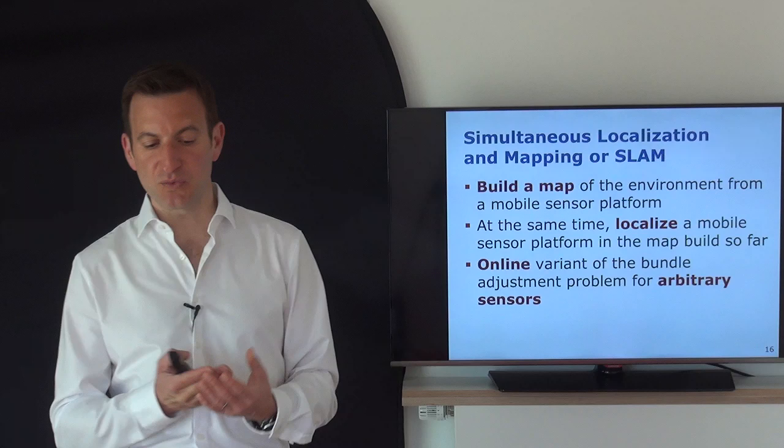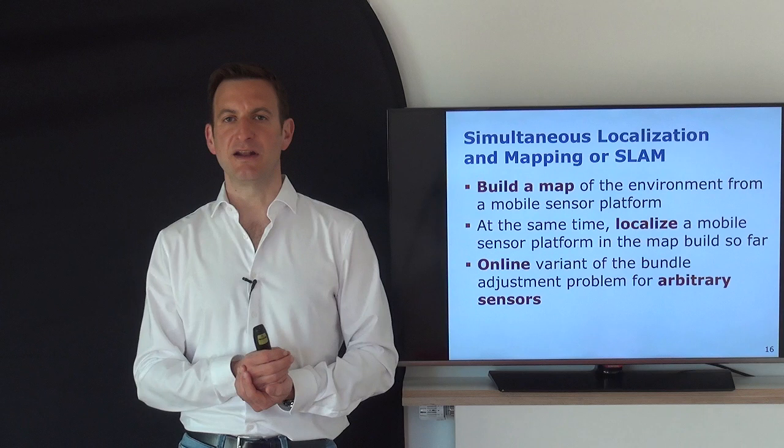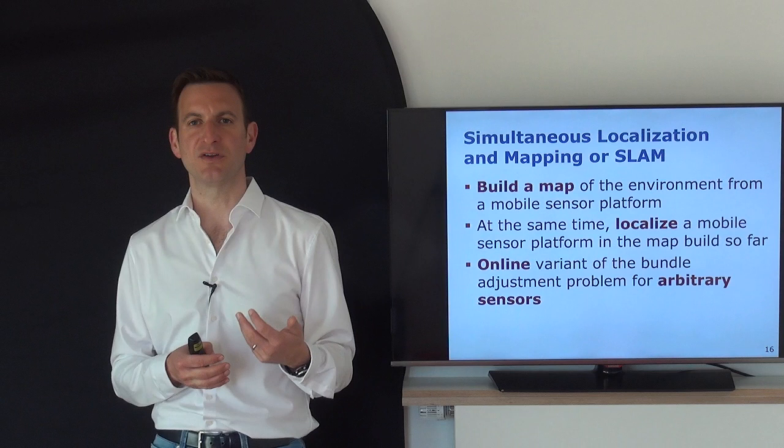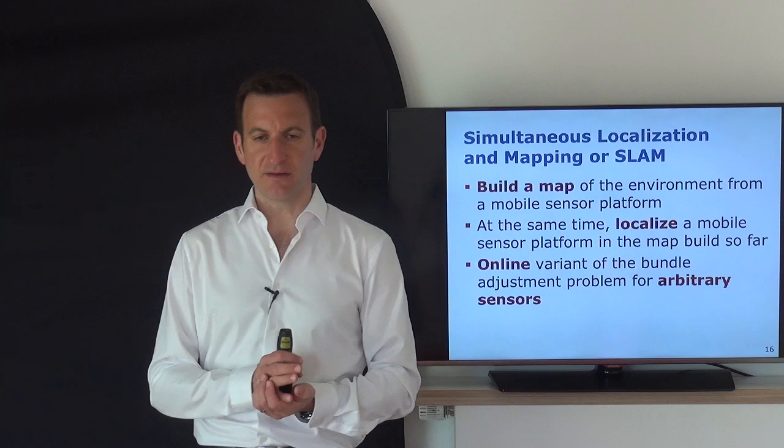The simultaneous localization and mapping problem means we want to build a map of the environment using sensor data from a mobile platform — a mobile robot, a person holding a camera, or a smartphone. We move the sensor through the environment, build a map, and at the same time localize ourselves in that map, coming up with both a map and a trajectory estimate.